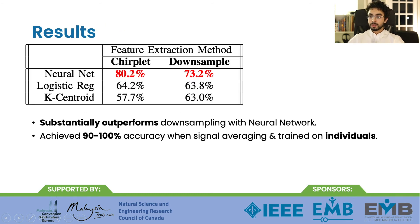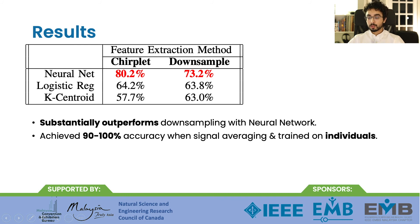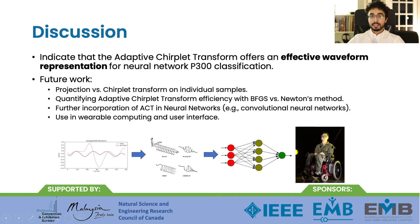The results are shown in the table below. The highest overall accuracy was achieved using a neural network with the chirplet projection feature vectors, outperforming the downsampling method by about 7%. We were also able to achieve state-of-the-art accuracy when training on individual participants with signal averaging. These results indicate that the Adaptive Chirplet Transform gives an effective waveform representation for neural networks in P300 classification.